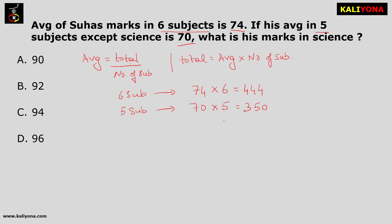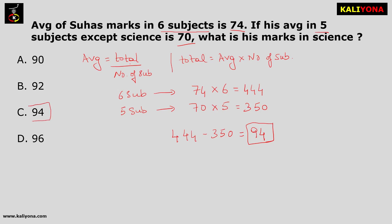So, we subtract: 444 minus 350 equals 94. Therefore, the marks in science is 94. Using this average formula, whenever you have total marks and need to find subject-related or average-related questions, you can find the answer. Our answer is option C, 94.